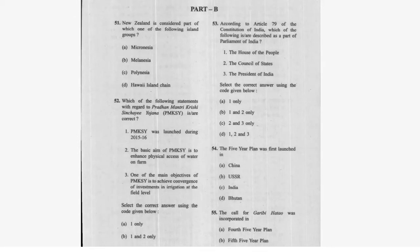Question 53: According to Article 79 of the Constitution of India, which of the following are described as part of Parliament? The House of the People, the Council of States, and the President of India — all three are correct. Under Article 79, three things come under Parliament of India. Option D is correct.